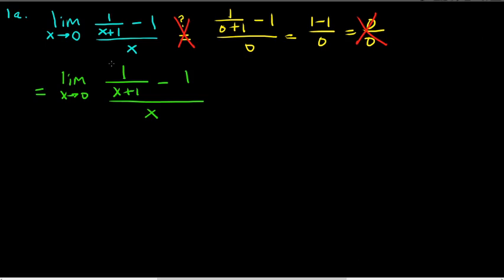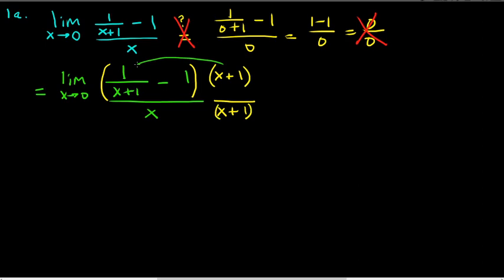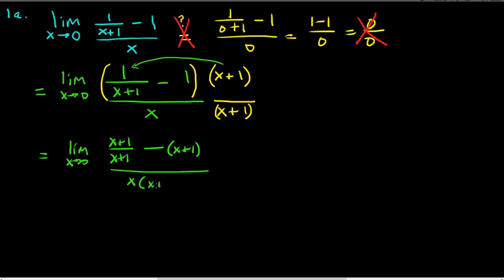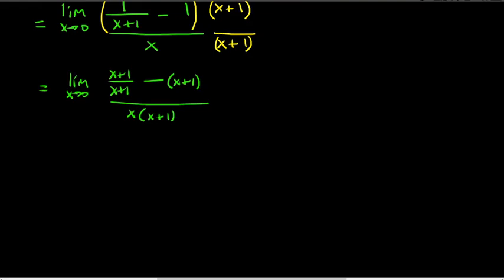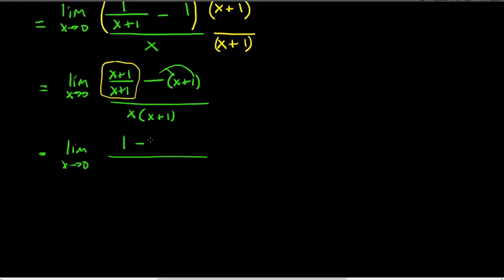This is an awkward fraction within a fraction, so what makes sense is to multiply the numerator and denominator by (x+1). When you distribute (x+1) in the numerator, the (x+1) in the denominator of the first term cancels, giving you (x+1)/(x+1) minus (x+1), divided by x(x+1). Don't forget the parentheses. This simplifies to 1 minus (x+1), so the numerator becomes 1 minus x minus 1.